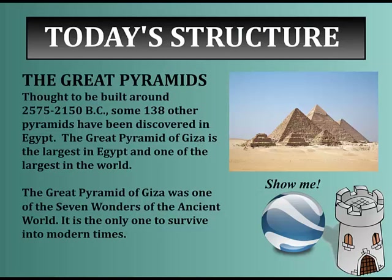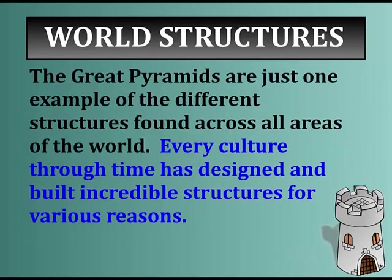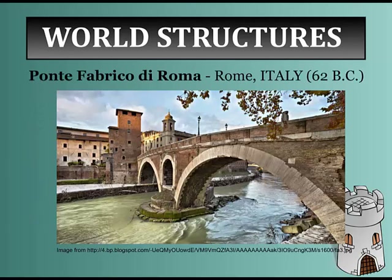The Great Pyramids are just one example of structures found across all areas of the world. Every culture through time has designed and built incredible structures for various reasons. Going to Rome, Italy — this bridge, the Ponte Fabrizio, was built in 62 BC. It was likely used to transport water at some point, but it is a freestanding bridge still standing today, looking remarkably well despite some visible decay.